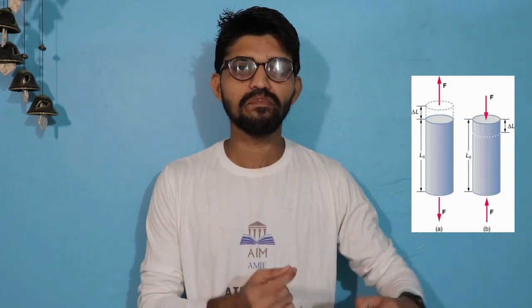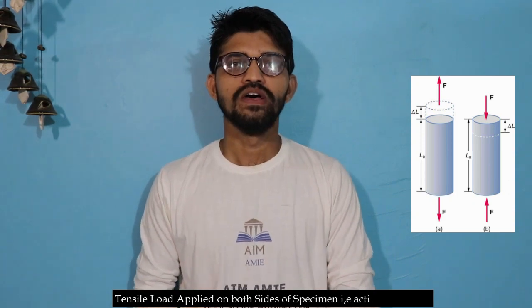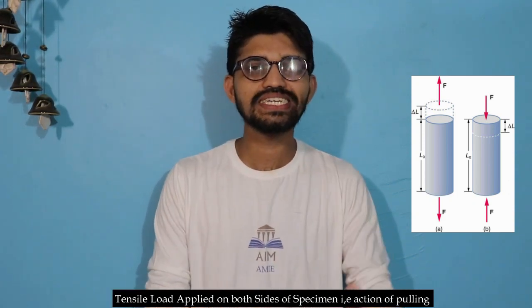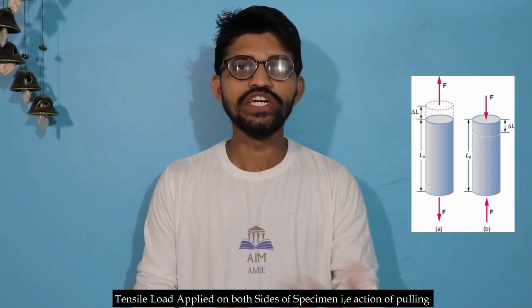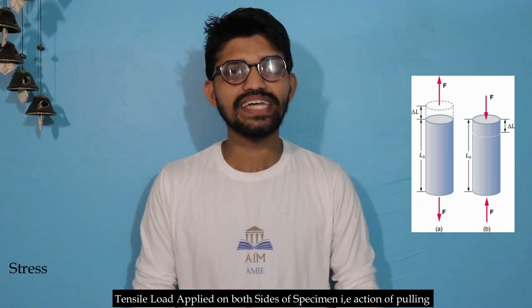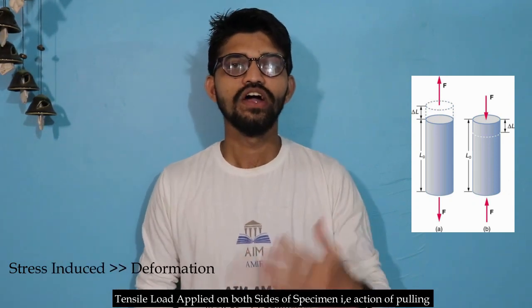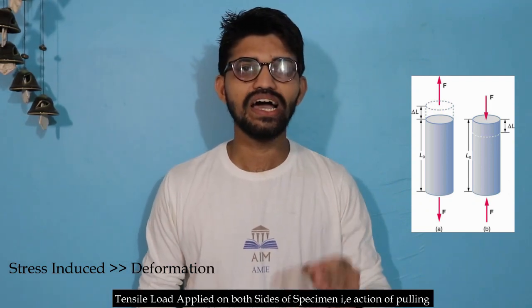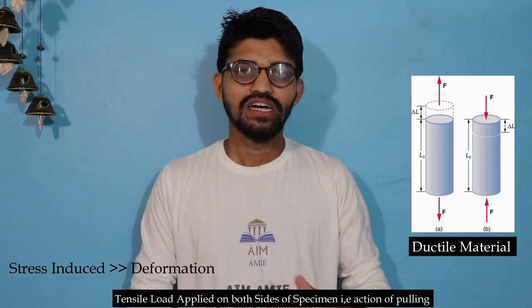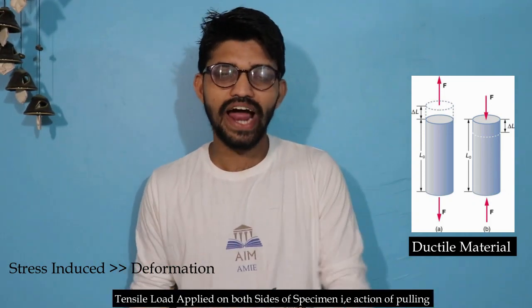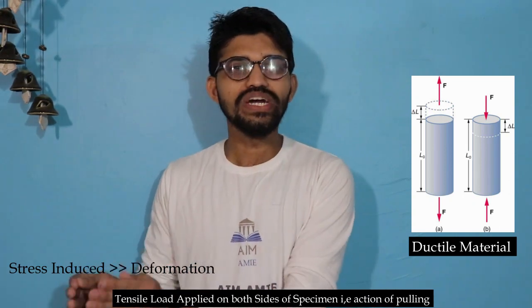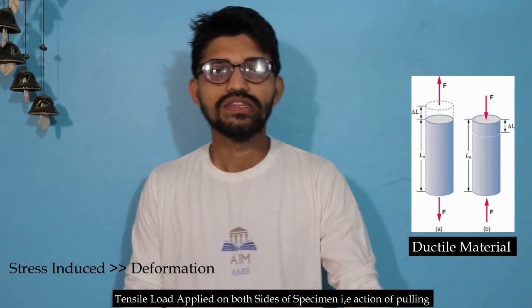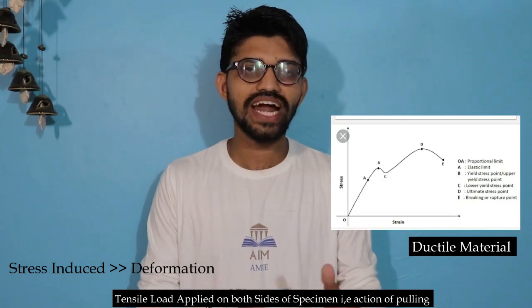A tensile load is applied on both sides of the specimen in opposite directions. After the application of the load, stresses get induced in the specimen, and due to those stresses, a certain amount of deformation occurs. The key point is that this specimen is made up of a ductile material, not a brittle material, and in this video we are covering the stress-strain relationship for that ductile material.